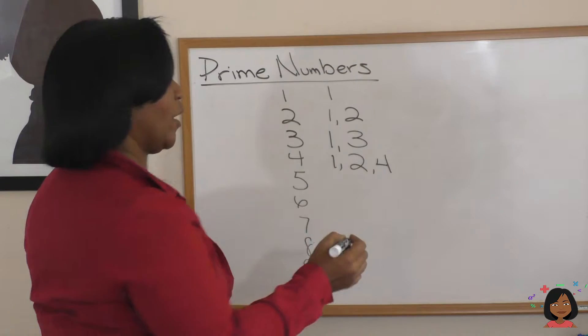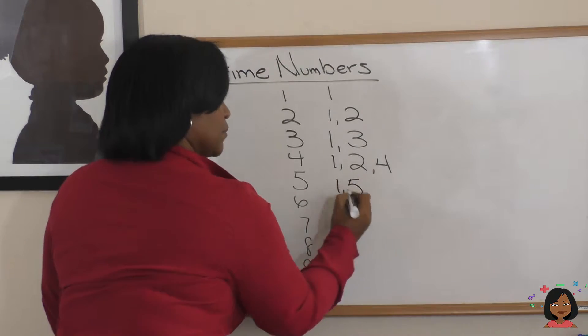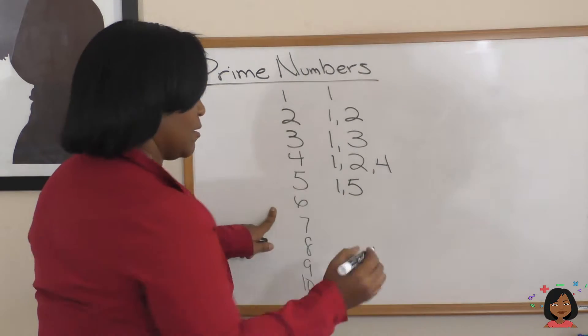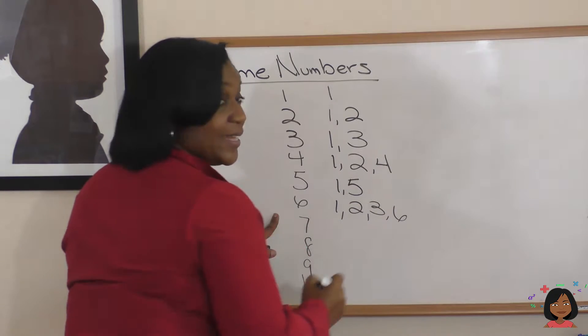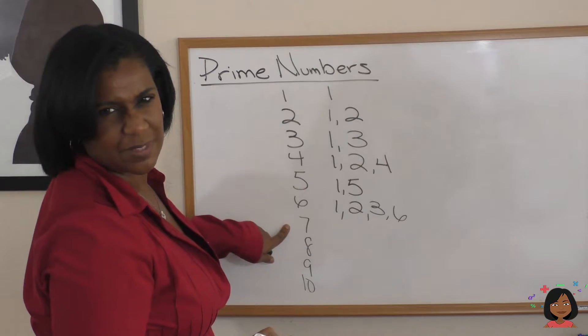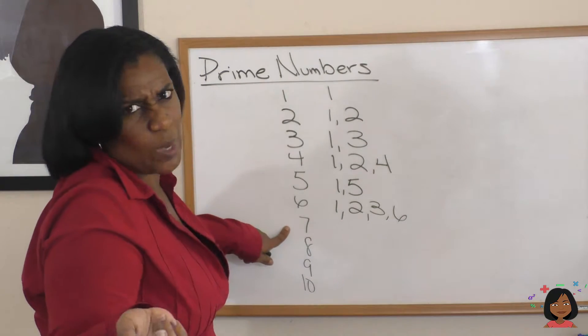Factors of 5 are 1 and 5. What about 6? We've got 1, 2, 3, and 6. What about 7? Just 1 and 7.